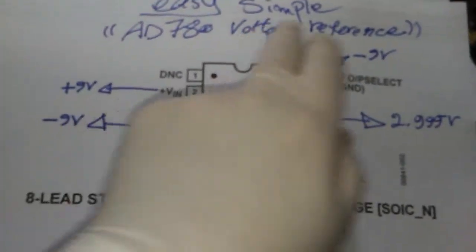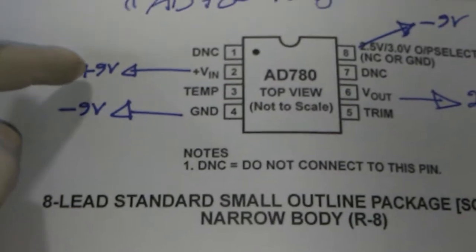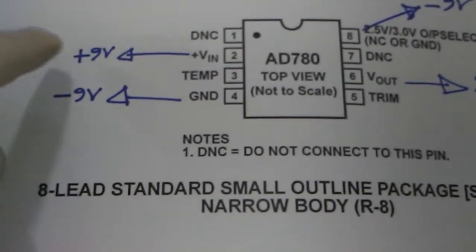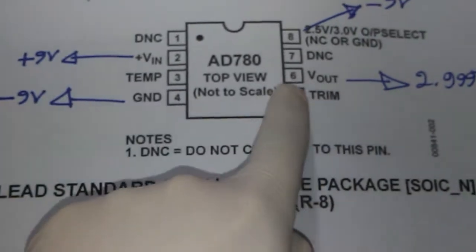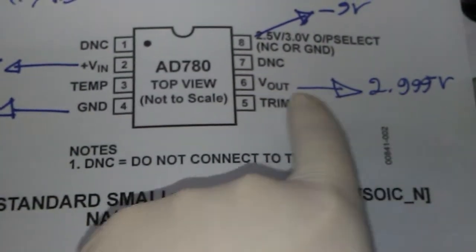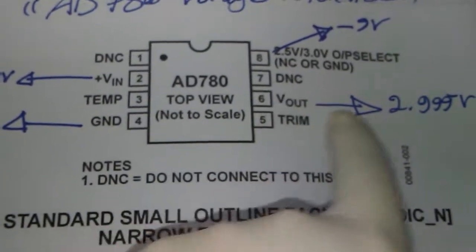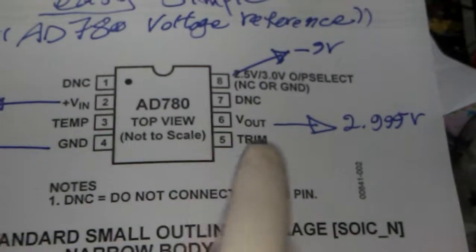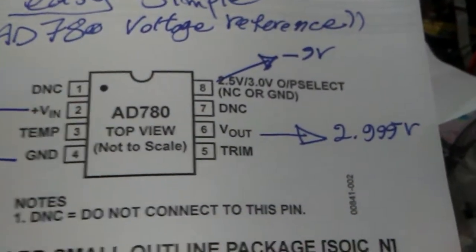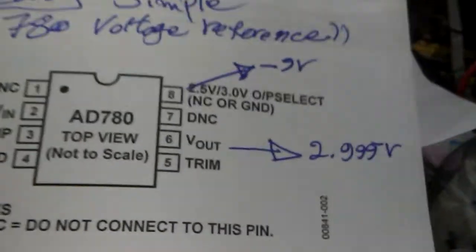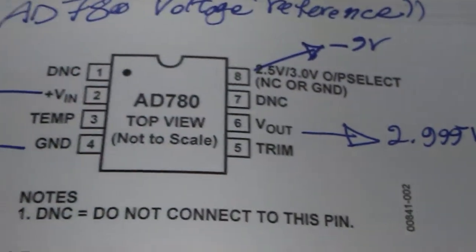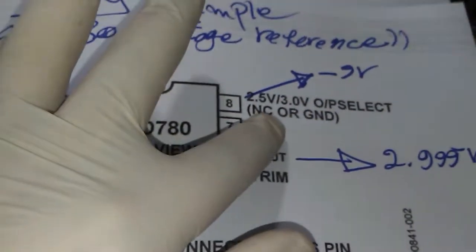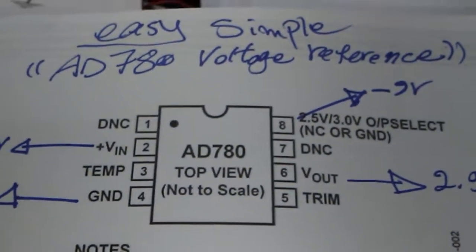This is a really easy simple voltage reference. Pin 2 should be connected to 9 volt or any other voltage more than 5.5 volt. The ground will connect to pin 4 and the output is pin number 6. I highly recommend to use the 100 microfarad capacitor here to fix the output voltage. We will make 2.999 volts. Also, if you connect pin 8 to the ground you have 2.5 volt, and without any connection you will make 3 volts.